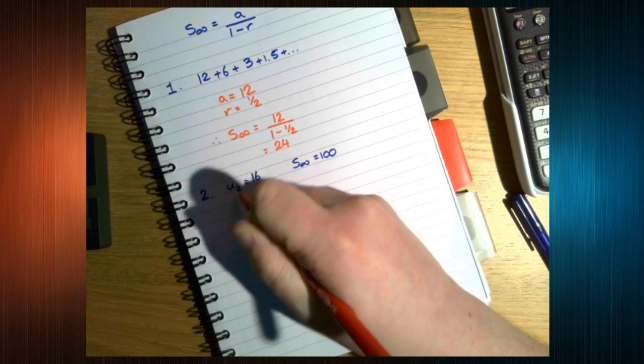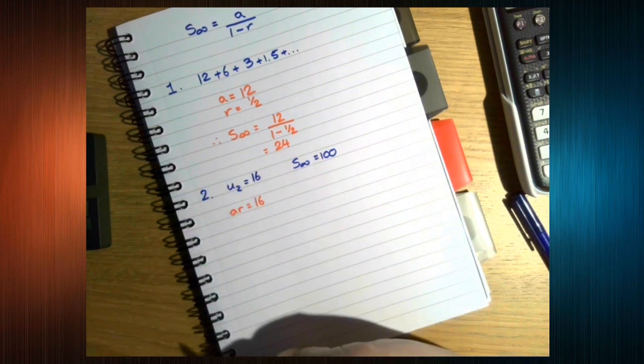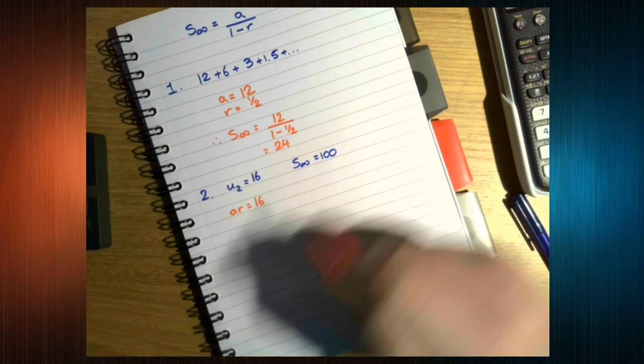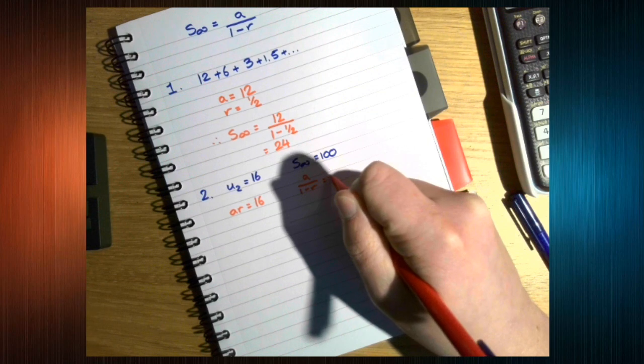So, the second term, ar equals 16. The sum to infinity, a over 1 minus r equals 100.